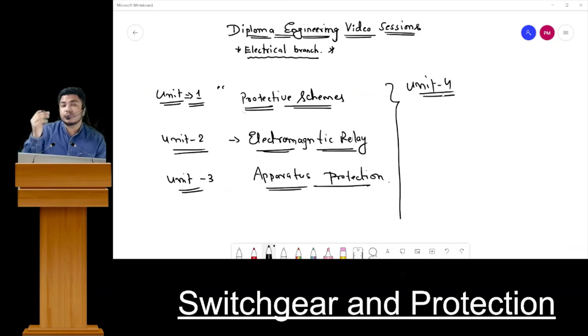Then after, we will discuss how we can give overcurrent protection, overvoltage protection - what all different types of protection schemes that we have learned in Unit 3, in Unit 4 simply we are going to apply our learnings. Let me write the heading - we are going to discuss static relays and numerical protection.